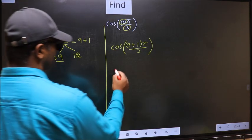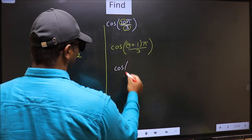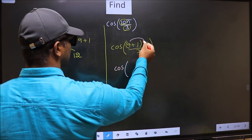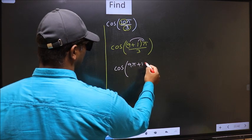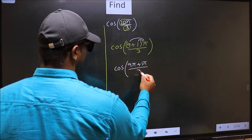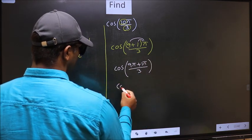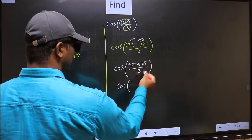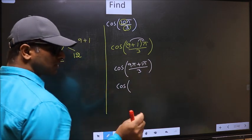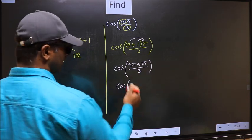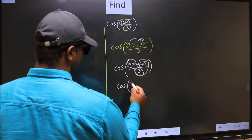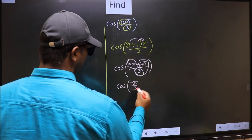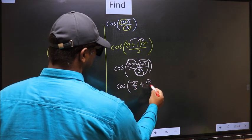Next, cos. Now you should open the brackets. You get 9π plus 1π by 3. Now cos, in this, you should split the denominator in this way: 9π by 3 plus 1π by 3.